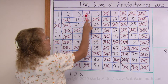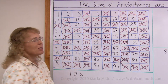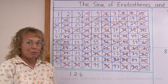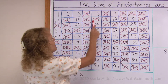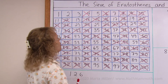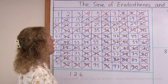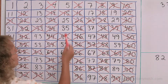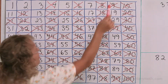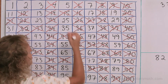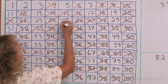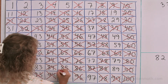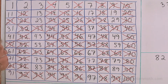Next comes 4, but all multiples of 4 are already crossed out when I went through the even numbers. Then 5 — I will leave 5, it is prime — but I will cross out all multiples of 5. Some of these are already crossed out, so just the ones in this column remain. That was quick.